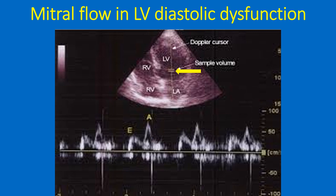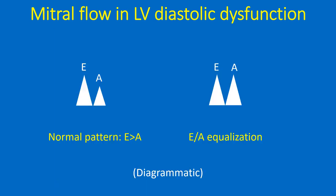The initial portion of the mitral diastolic flow is called the E-wave (early diastolic), and the final portion occurring during atrial systole is called the A-wave. Normally, most of the left ventricular filling occurs during early diastole and the E-wave is taller than the A-wave. When ventricular relaxation is impaired in diastolic dysfunction, the atrial contribution to ventricular filling progressively increases and the A-wave height increases, causing equalization of the E and A-waves.